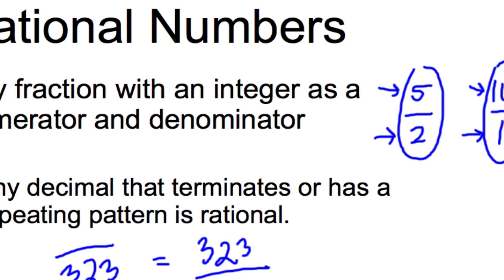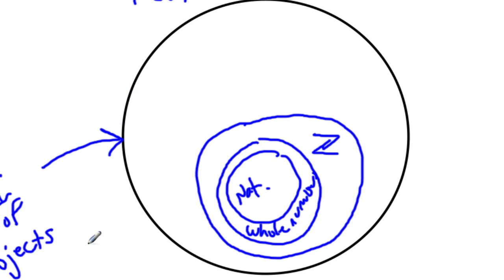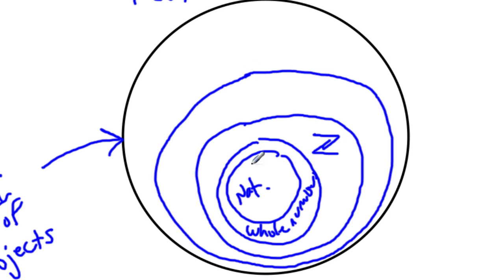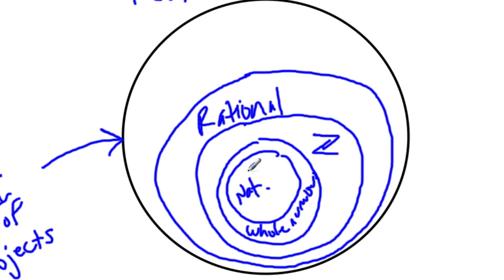A repeating decimal can be expressed as a fraction, making it rational. Also, a decimal that has some kind of ending — one that terminates — is also a rational decimal. Going back to our diagram of real numbers, the natural numbers, whole numbers, and integers are all rational. Rational numbers also include fractions. All the integers, whole numbers, and natural numbers fit inside the rational number set, plus additional numbers like non-integer fractions.